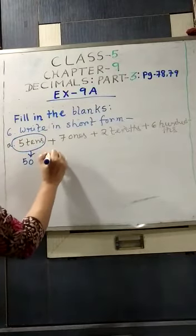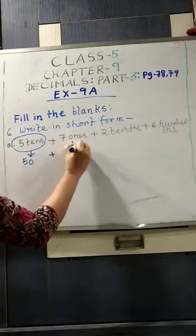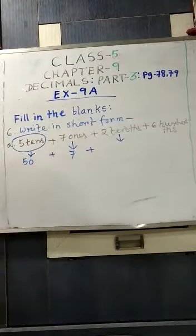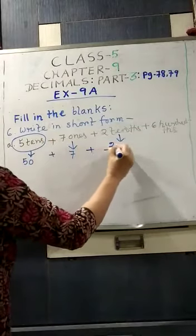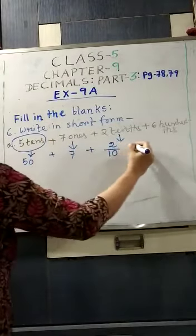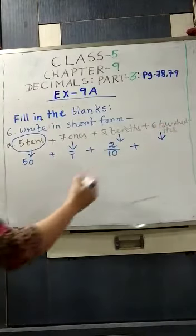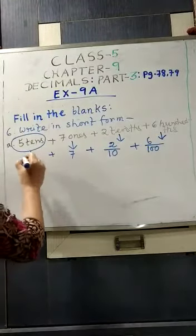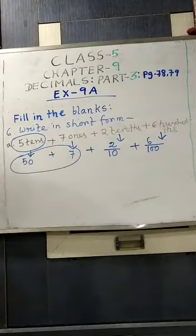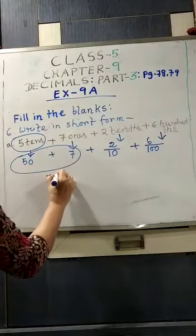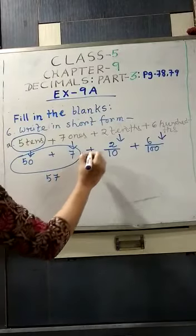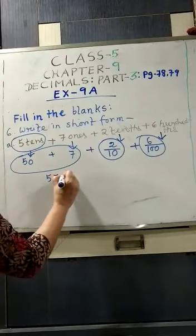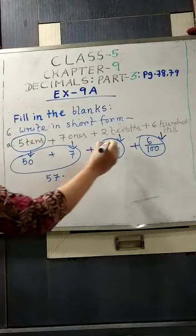Then plus 7 ones, that means 7. Plus 2 tenths, that means 2 by 10. And plus 6 hundredths, that means 6 by 100. Clear? Now 50 plus 7, what is 50 plus 7? 57.